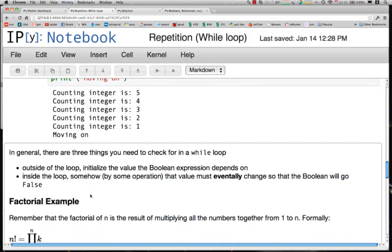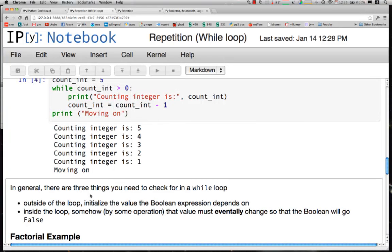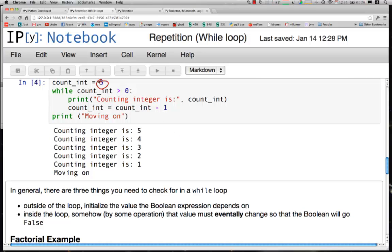In general, there are three things you need to do in a while loop, which we did here. We need to initialize the loop outside so that it will start. We did that here. We set count equal to 5 so that we could get started. Second, during the operation of the loop, the counting variable should change. We did that here so that it went down by 1 so that eventually the Boolean would become false and we get out of our loop.